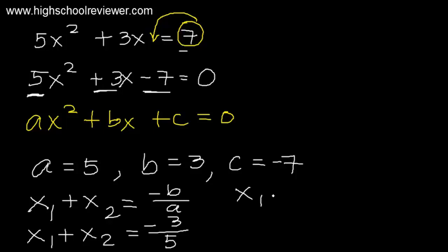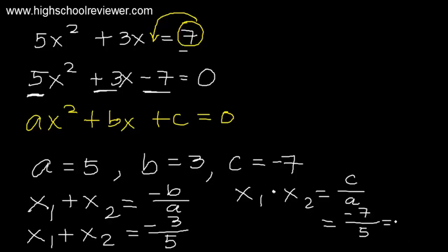For the product of the roots, x₁ times x₂, the formula is C over A. Our C is negative 7 divided by A which is positive 5. Converting to a mixed number: negative 1 and 2 over 5. So x₁ times x₂ equals negative 1 and 2/5.